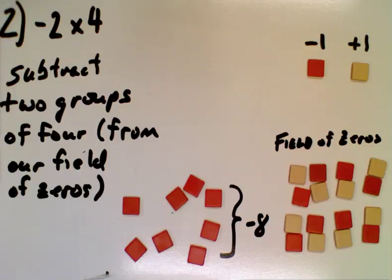So again, what we did is we subtracted two groups of positive 4 from that field of zeros. And the field of zeros is infinite, so we can continue to subtract things from it as much as we want. So now let's take a look at what a negative times a negative would look like.